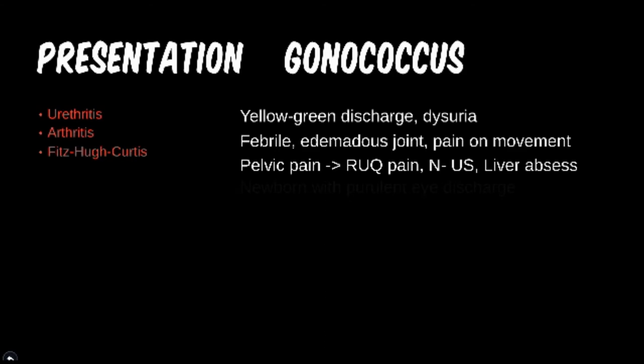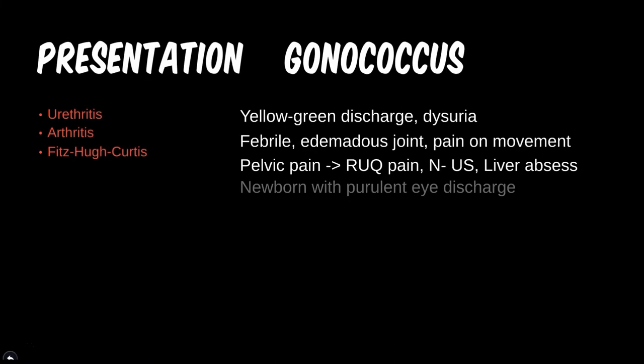With pelvic pain, a normal ultrasound, and liver abscesses, this is Fitz-Hugh Curtis syndrome. The right upper quadrant pain is generally seen in liver and gallbladder disease, hinting at pathology in this anatomic region. An ultrasound will be normal in about half of patients, and unless you're going into infectious disease, you may never encounter this clinically.